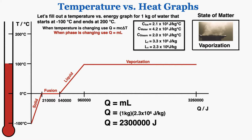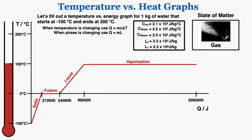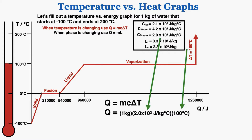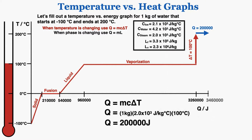This line represents the water going through vaporization. Finally, the water exists as a gas once completely vaporized. In this last section, from 100 to 200 degrees Celsius, we use Q = mcΔT with a temperature change of 100°C and the specific heat of steam, which gives 200,000 joules. Altogether that brings us to 3,460,000 joules of total heat energy added, and the water has reached 200 degrees Celsius as steam.